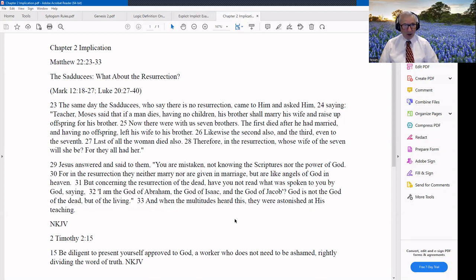And they had to infer something that was not implied, but they inferred that. Came to Him and asked Him, saying, Teacher, Moses said that if a man dies having no children, his brother shall marry his wife and raise up offspring for his brother. Now there were with us seven brothers. The first died, and he had married, having no offspring, left his wife to his brother. And so on to the wife of the seventh. The seventh died, then the woman died. So they asked, they didn't believe in the resurrection, remember? Whose wife of the seven will she be? For they all had her.